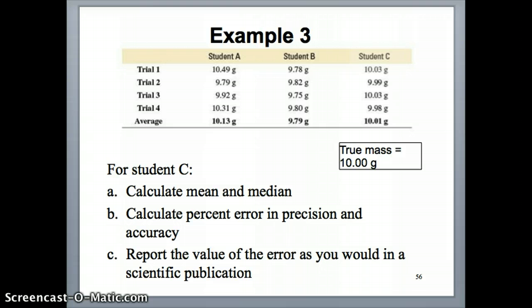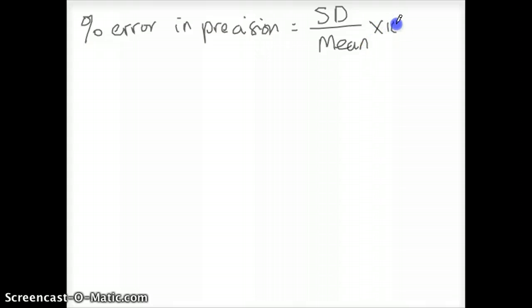The last question asked for percent error in precision and accuracy. Just a reminder that to calculate the percent error in precision, you show what is the standard deviation relative to the mean times 100%. This formula should make sense because it's telling you how big of a spread the standard deviation is with respect to the mean. The bigger this value is, the more spread apart your data is, the more variable your data is, which means the less precise it is. That number, the error, would then be a bigger number.